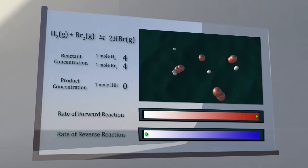Initially, the reaction vessel contains only the reactants, hydrogen gas and bromine gas.